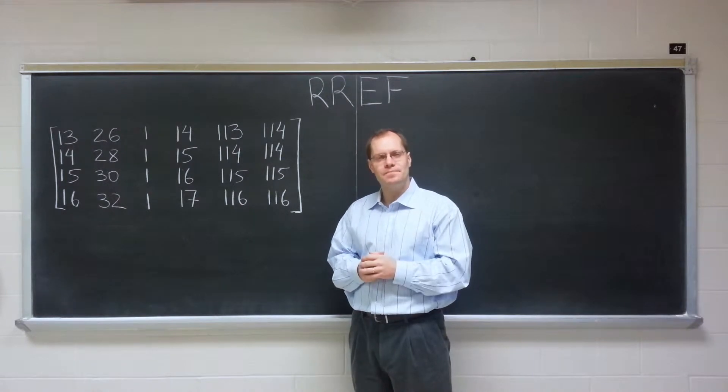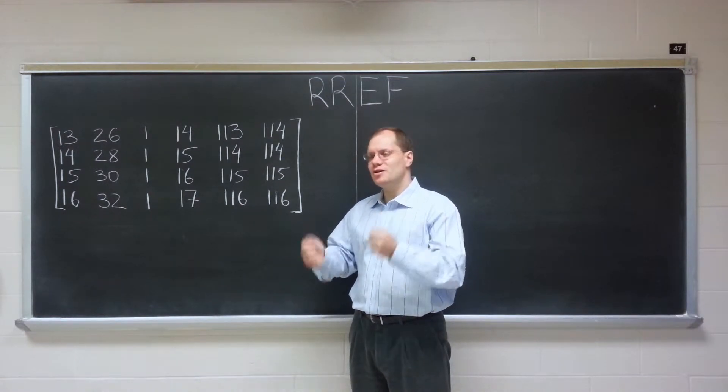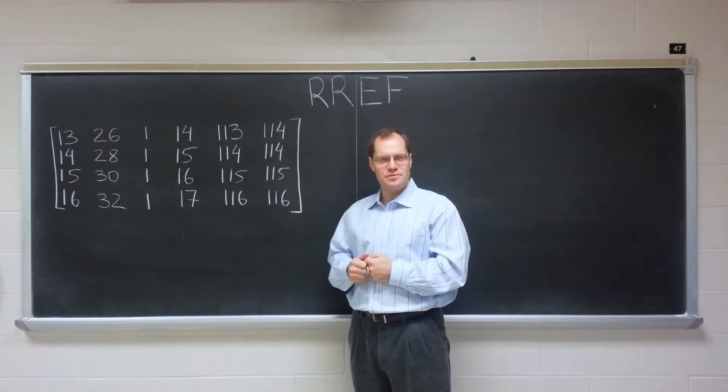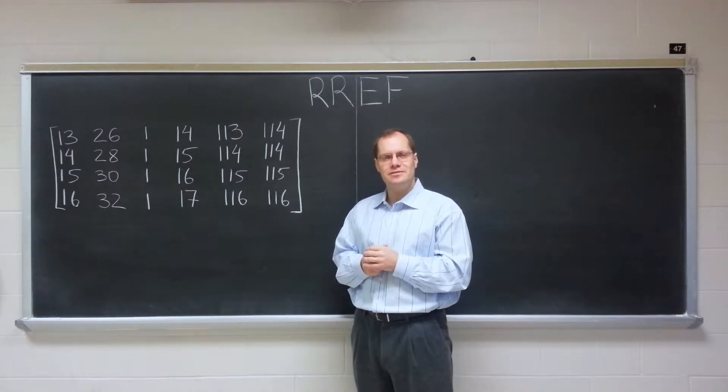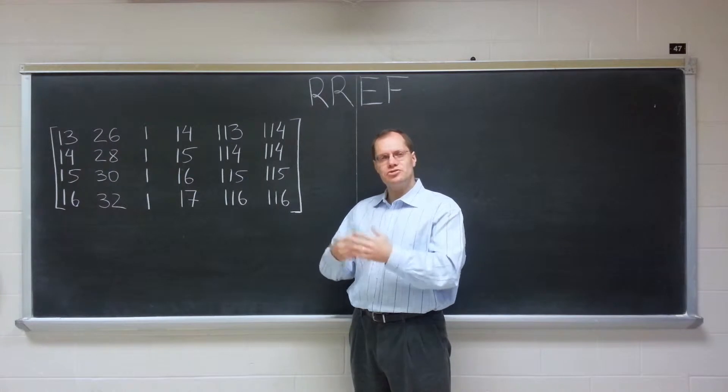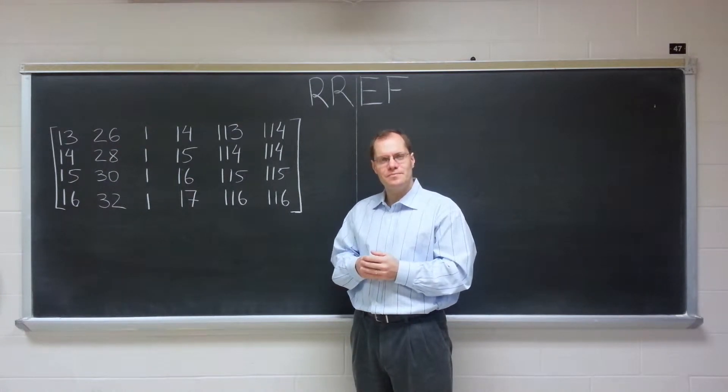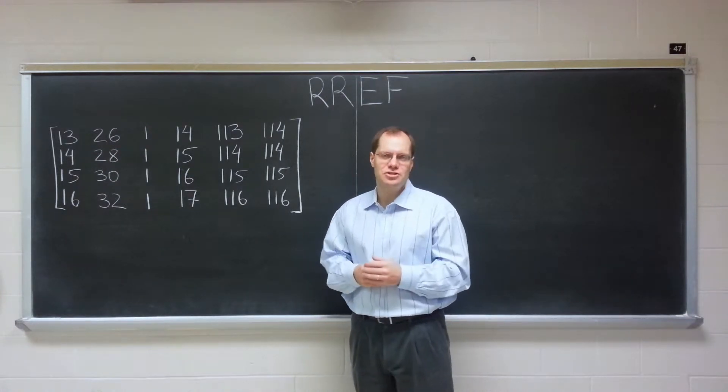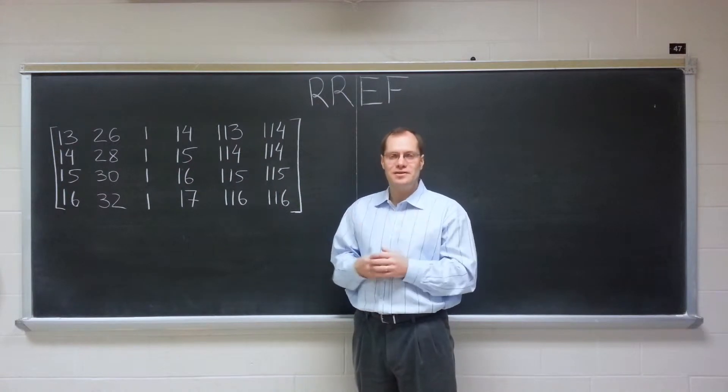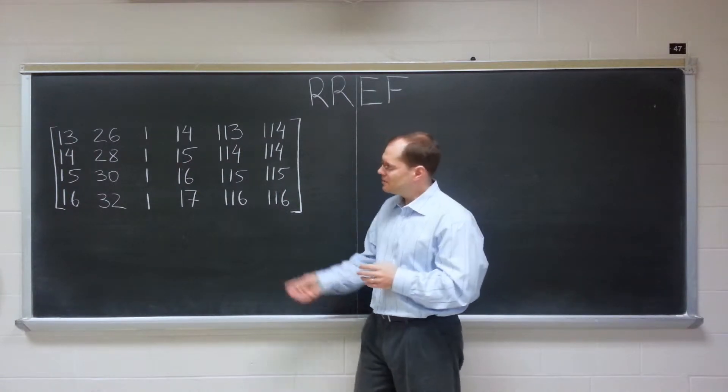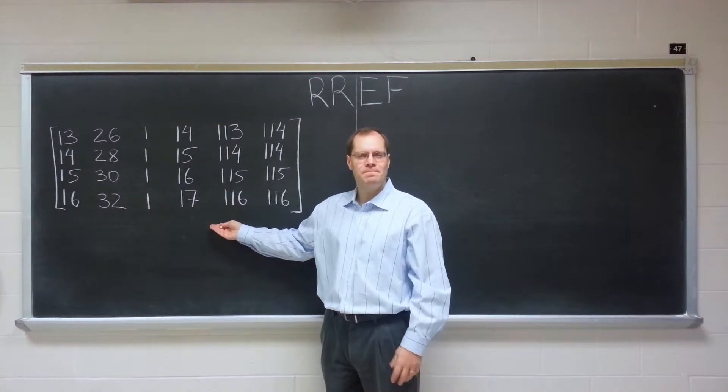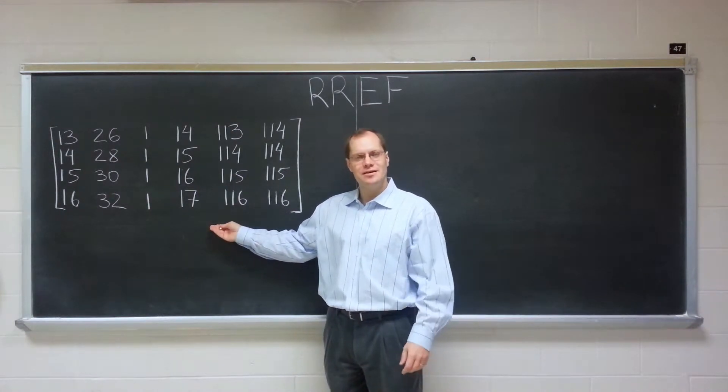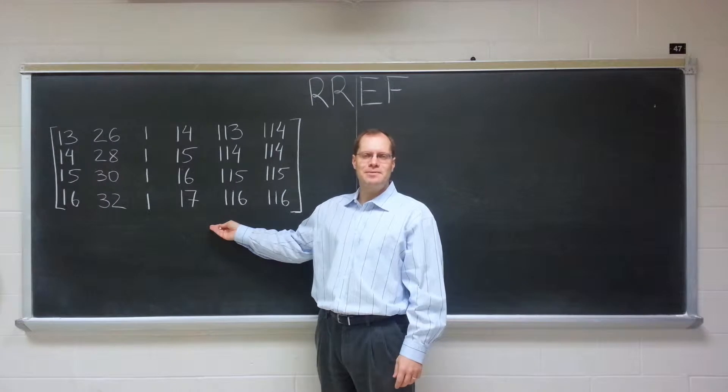Of course, row reduced echelon form is all about revealing the relationship among the columns. We perform Gauss elimination to bring the matrix to the row reduced echelon form, so that we're able to see the relationship among the columns that we previously could not see. But this is a funny example that has no applications, no practicality.